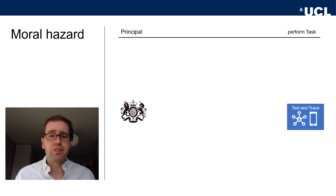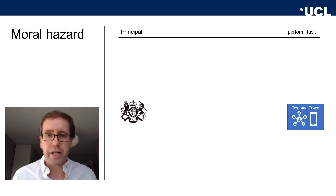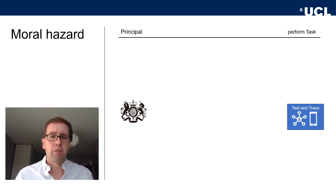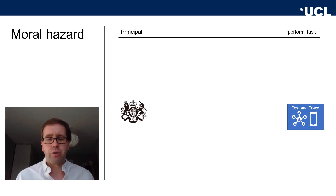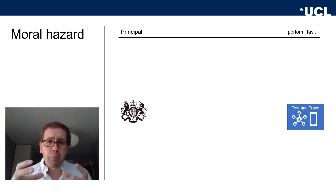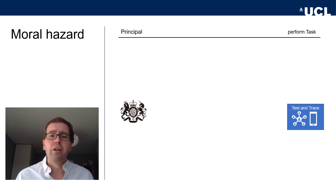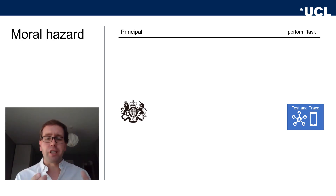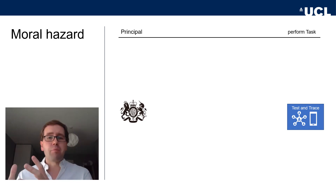The British government as the principal wants someone to perform a task — for example, set up a functioning test and trace system for the coronavirus. How do they get that done? They have a couple of choices: they can try to do it themselves, but the central government cannot do it alone. So they would have to set up a separate bureaucracy, use an existing one like local public health teams, or use an outside service provider.